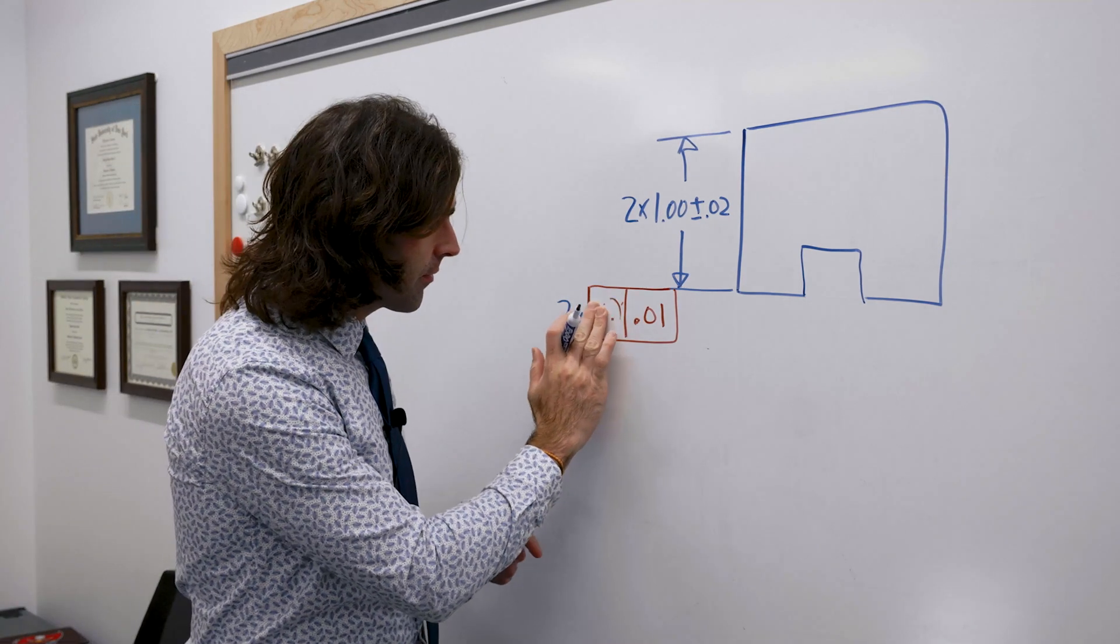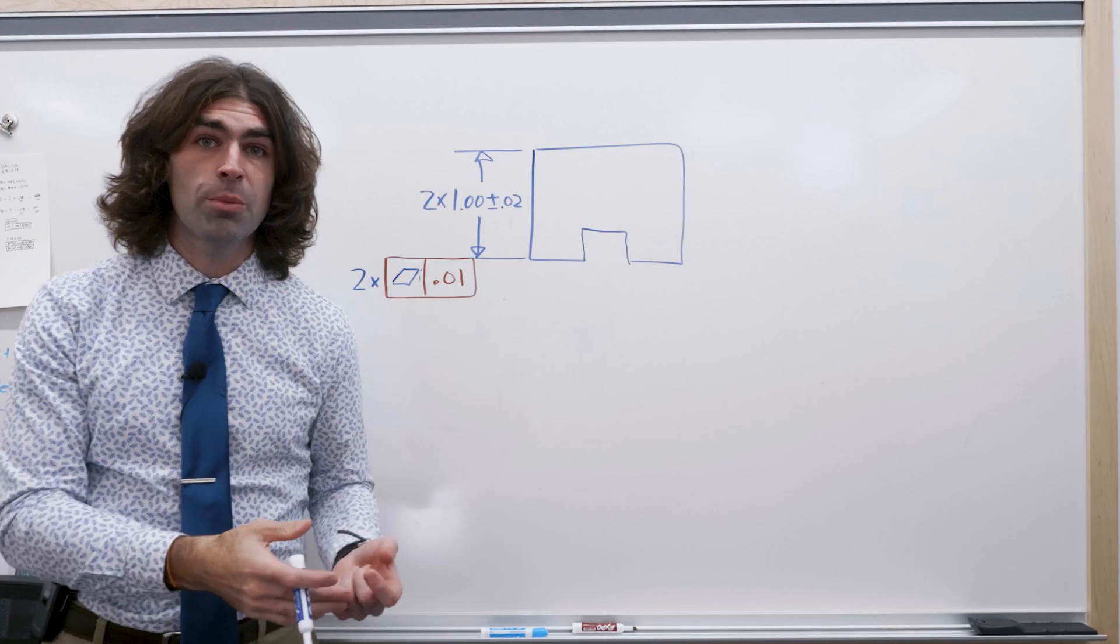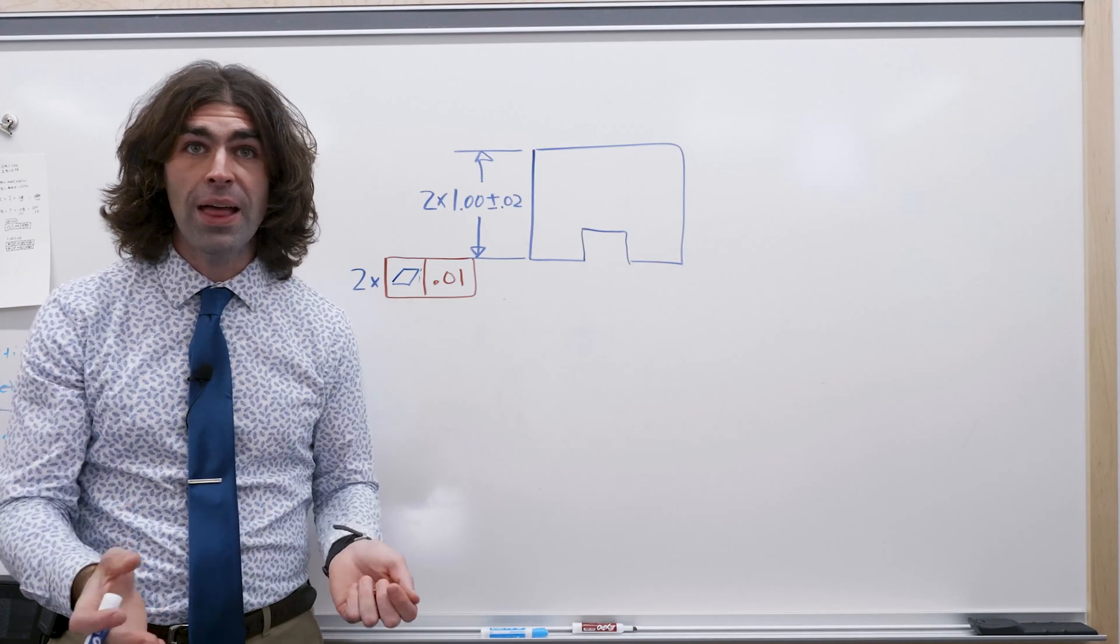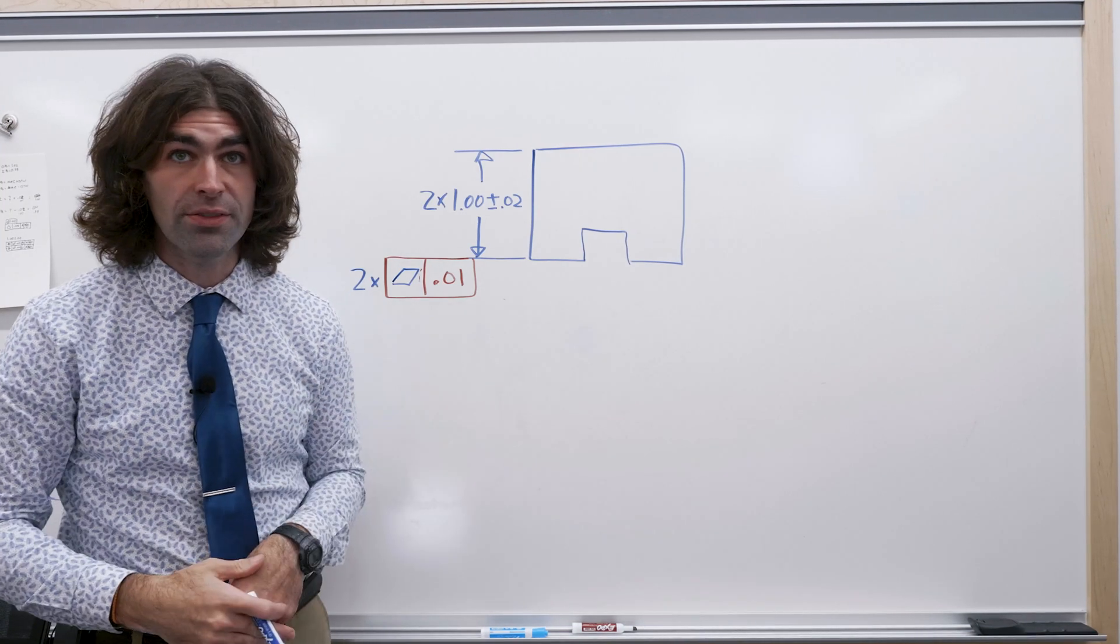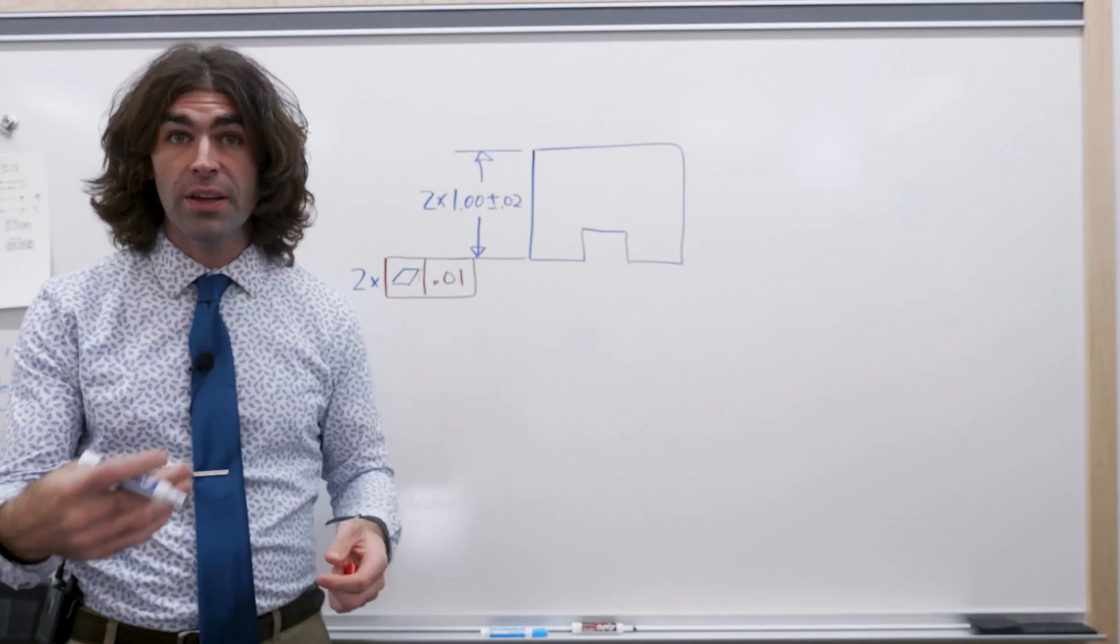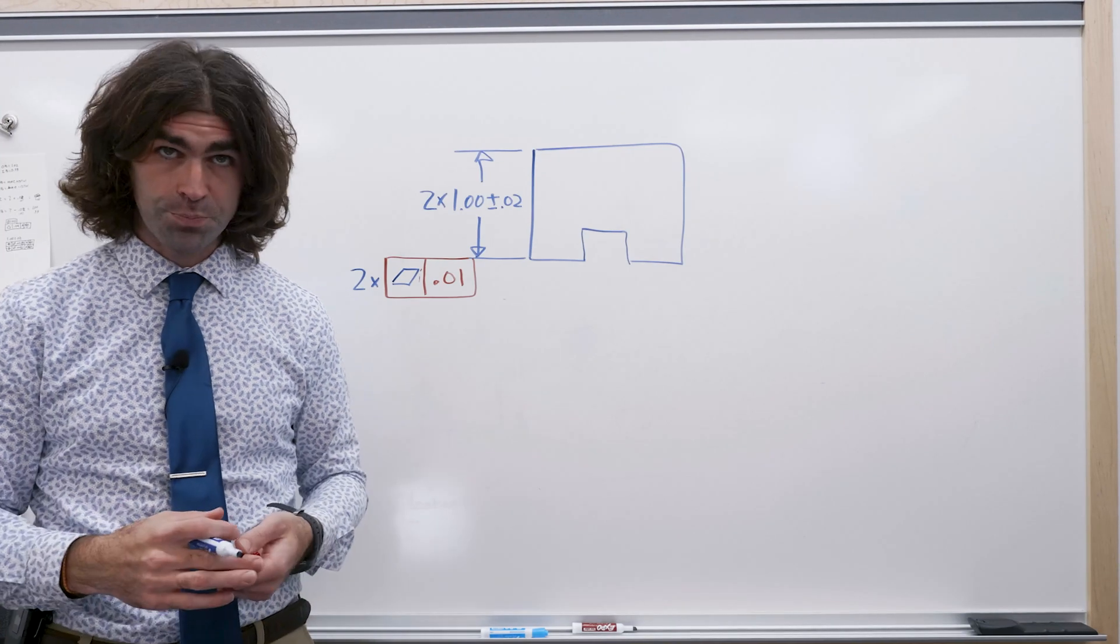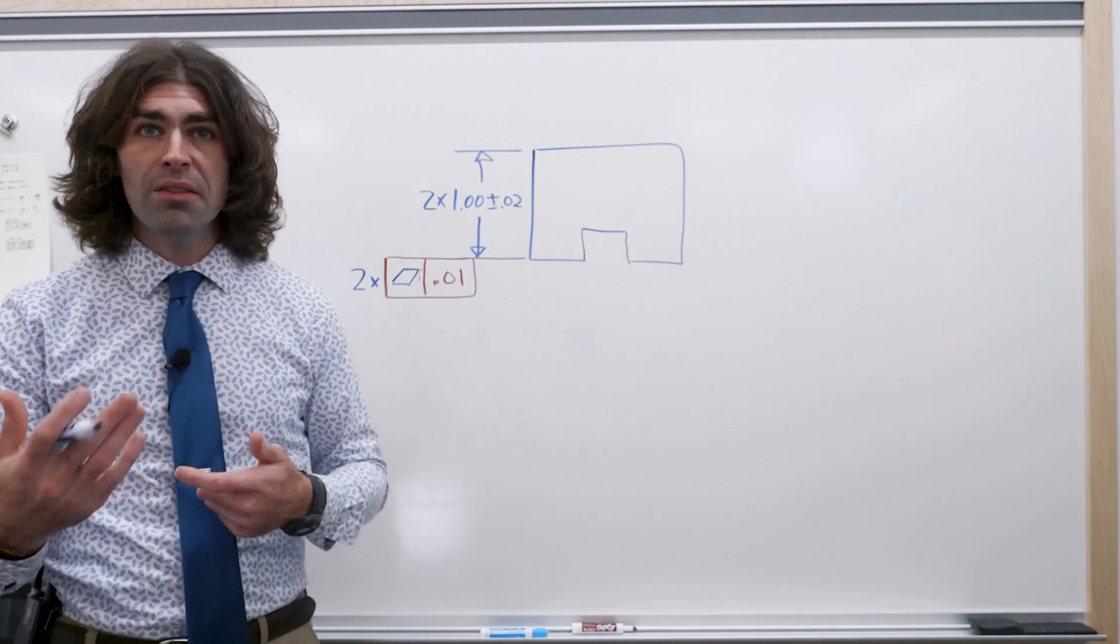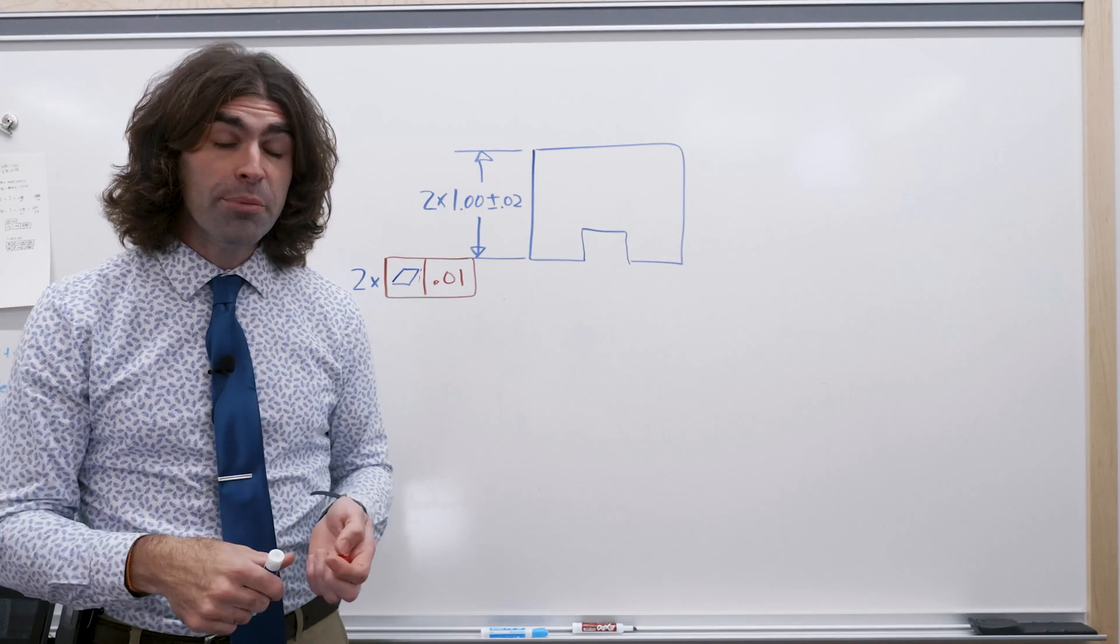If you had flatness right here, then there is no coplanarity between those surfaces. They have to be flat but they can be crooked to each other within the limits of size. So there are some differences with profile and things like flatness and places where you'd want to use flatness instead. But if it's just a single flat plane, profile and flatness mean the same thing.